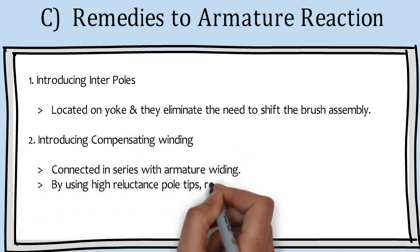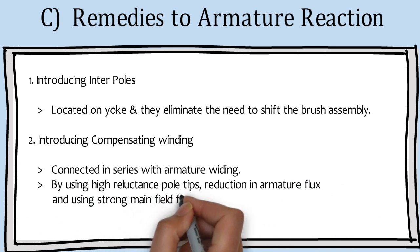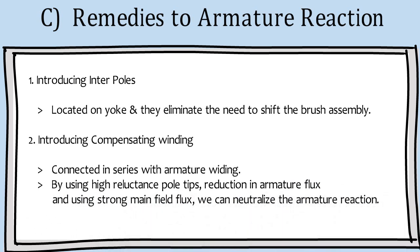In order to reduce it, compensating winding can also help. By using high reluctance pole tips, reduction in armature flux, and using strong main field flux, we can neutralize the armature reaction.